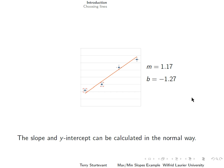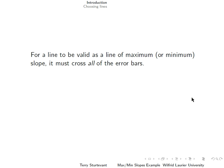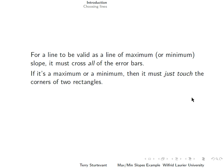The slope and y-intercept for any line like this can be calculated as usual. For a line to be valid as a line of maximum or minimum slope, it must cross all of the error bars. If it's a maximum or a minimum, then it must just touch the corners of two rectangles. If it wasn't just touching the corners of two rectangles, then you could make it steeper or less steep by moving it to those corresponding corners.